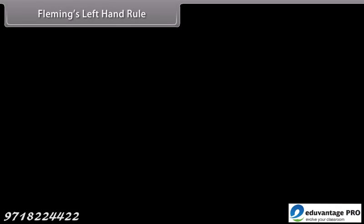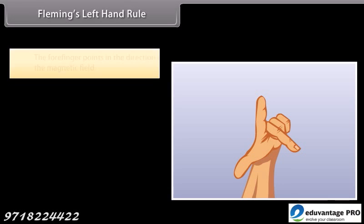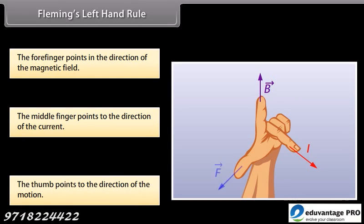Fleming's left hand rule. Fleming's left hand rule is mnemonic to represent three directions. You need to stretch your thumb, forefinger and middle finger of your left hand. Each finger points to a specific direction. The forefinger points in the direction of the magnetic field. The middle finger points to the direction of the current. The thumb points to the direction of the motion. This is Fleming's left hand rule.